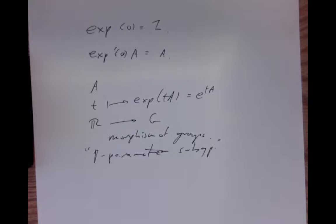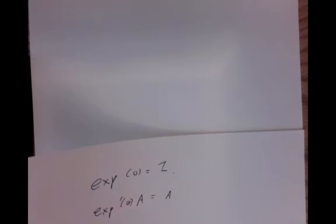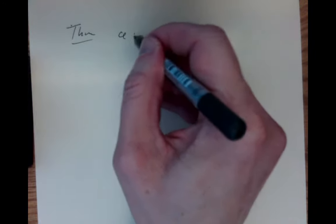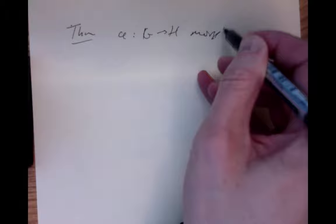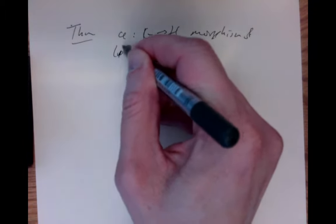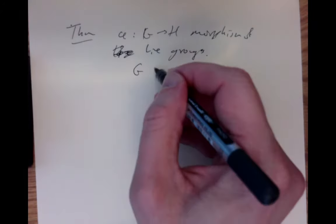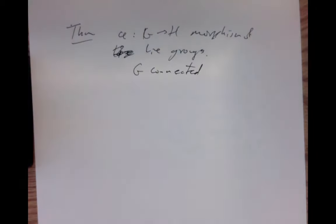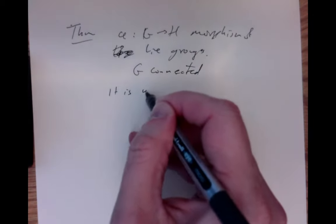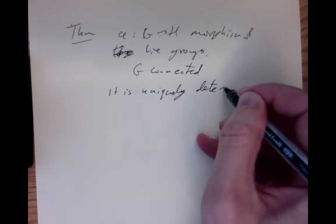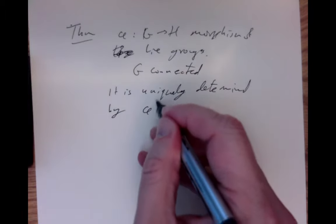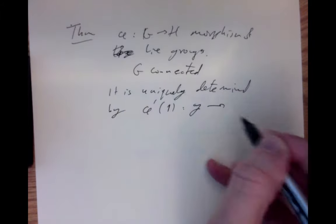We have an elementary fact about exponential maps, trivial to check for the matrix case. Given a morphism of Lie groups with G connected, it is uniquely determined by its derivative at the identity element, which takes the tangent space at the identity of G to the tangent space at the identity of H. I'm using these Fraktur letters to represent tangent spaces at the identities — the Lie algebras.